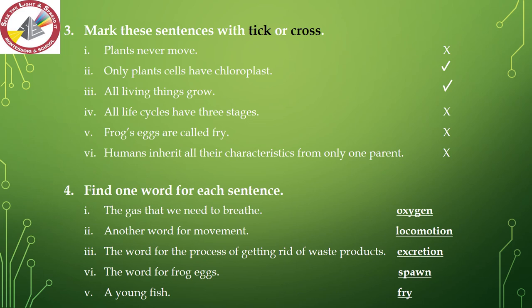Question number 4 — find one word for each sentence. Number 1 — the gas that we need to breathe is oxygen. Number 2 — another word for movement is locomotion. Number 3 — the word for the process of getting rid of waste products is excretion. Number 4 — the word for frog eggs is spawn. Number 5 — a young fish is called fry.